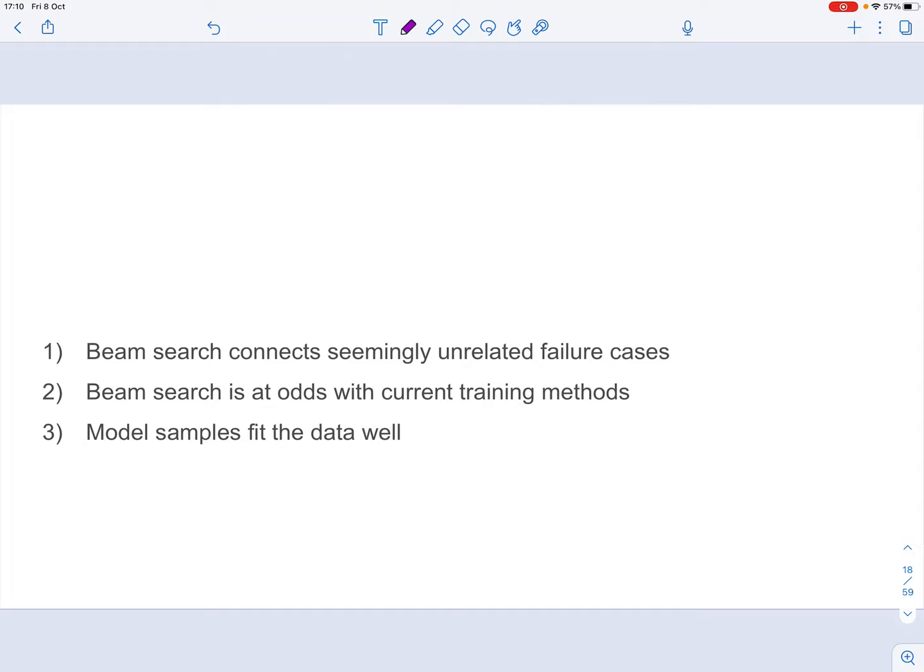The ones that I found are most significant are these ones. Namely, first of all, that beam search is something that connects failure cases of NMT that are otherwise unrelated. And secondly, they make the case that beam search is incompatible with how NMT models are currently trained. Or in the sense that the training objective and the decoding objective are in fact not aligned. And finally, they establish that model samples on their own without beam search actually fit the training data really well. And I'm going to briefly talk about each of these points now in this part. Let's start with the first one, beam search connecting unrelated failure cases.